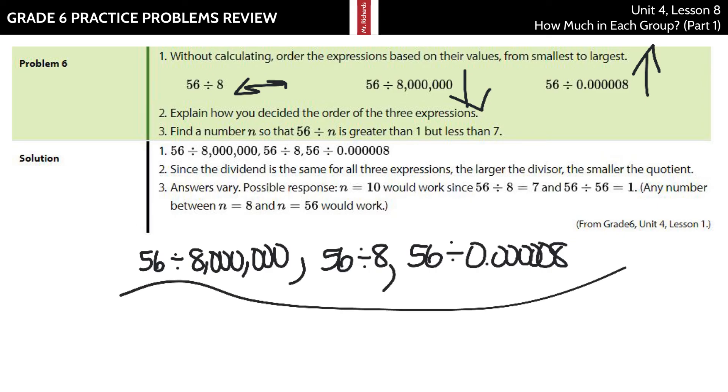Explain how you found the answer. Well, I hope I did for you, but our answer here, since the dividend is the same for all three expressions, that would be the 56 part, the larger the divisor, the smaller the quotient. So the larger the divisor, the smaller the quotient. So this is the largest, so it's going to have the smallest quotient. This is the one in the middle, so it's the one in the middle. This is the smallest divisor, so it's going to be the biggest quotient.